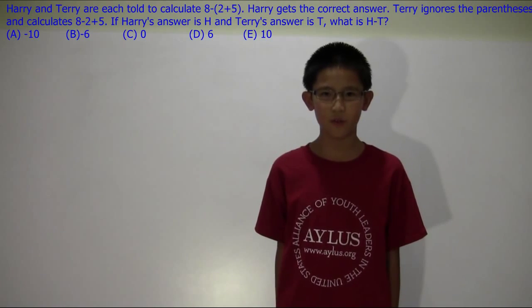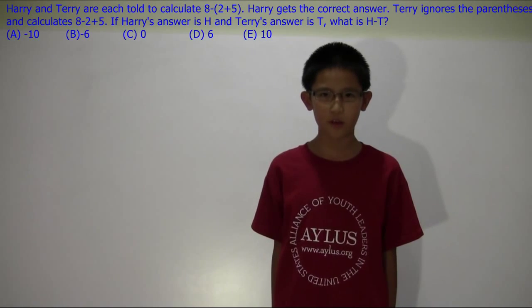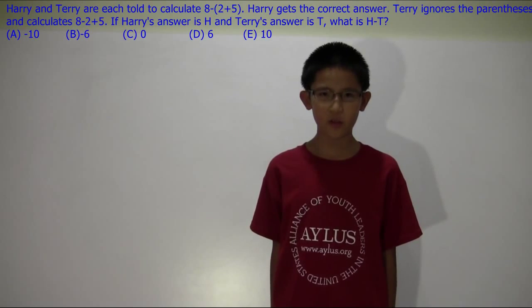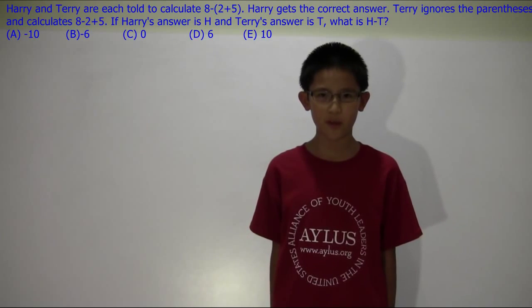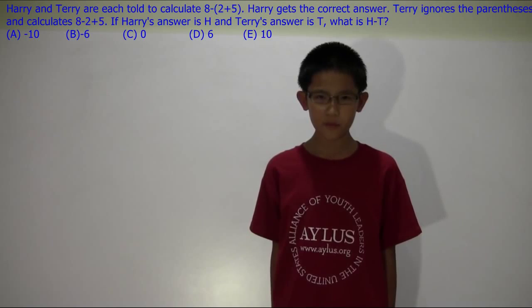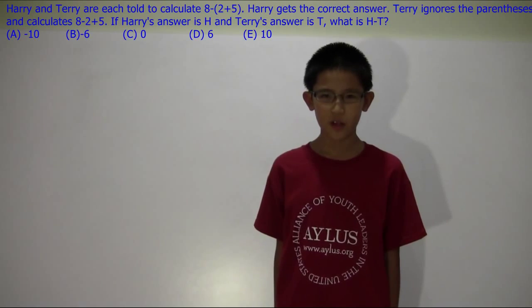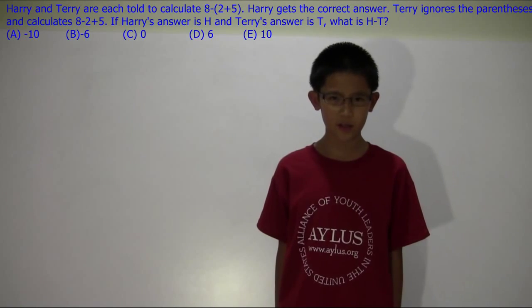Harry and Terry are each asked to calculate 8 minus parenthesis 2 plus 5. Harry gets the correct answer. Terry ignores the parenthesis and calculates 8 minus 2 plus 5. If Harry's answer is h and Terry's answer is t, then what is h minus t?